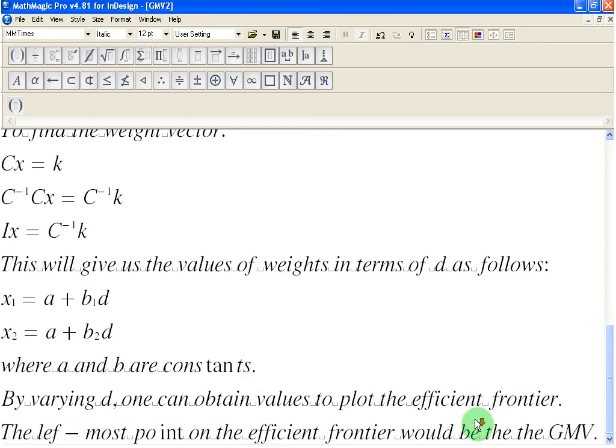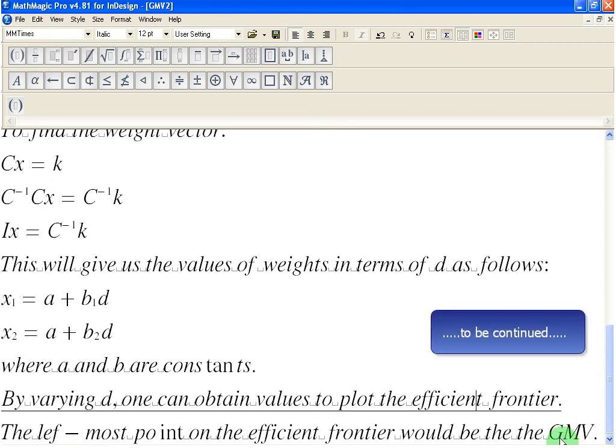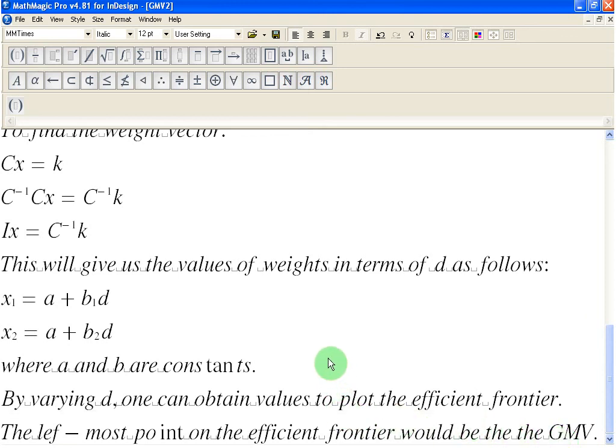And the leftmost point of the efficient frontier would give us the global minimum variance. In the next screencast, my friends, we are going to take up some numerical data and see how we can derive the global minimum variance. And then we are going to plot an efficient frontier out of it. For now, it's goodbye. Thank you very much.